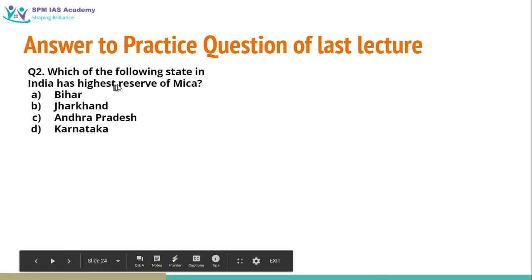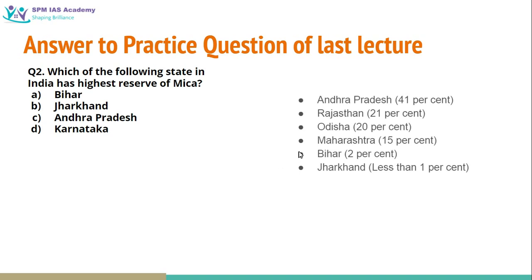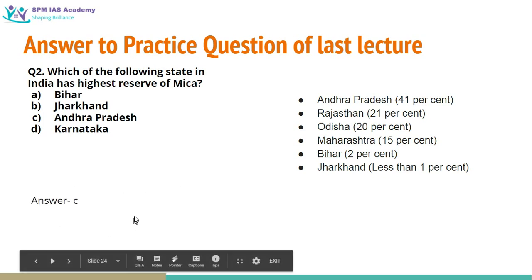Which of the following states in India has the highest reserve of mica? The article we had seen was about child labor in Bihar and Jharkhand in mica mines. But if you see the reserves of mica in India, the highest reserve of mica is in Andhra Pradesh — about 41 percent. Bihar and Jharkhand have a very insignificant amount of mica. So the correct answer will be C: Andhra Pradesh.